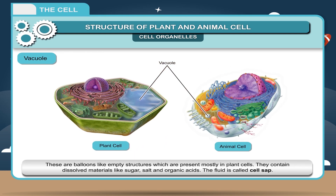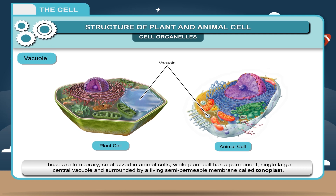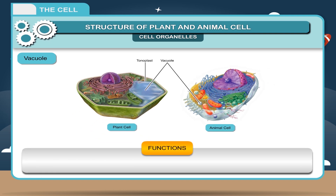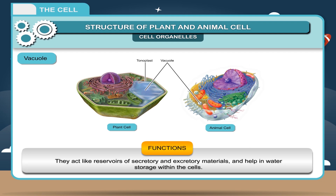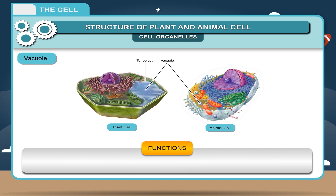Vacuole. These are balloon-like empty structures which are present mostly in plant cells. They contain dissolved materials like sugar, salt and organic acids. The fluid is called cell sap. These are temporary and small sized in animal cells, while plant cells have a permanent, single large central vacuole surrounded by a living semi-permeable membrane called tonoplast. They act like reservoirs of secretory and excretory materials and help in water storage within the cells.